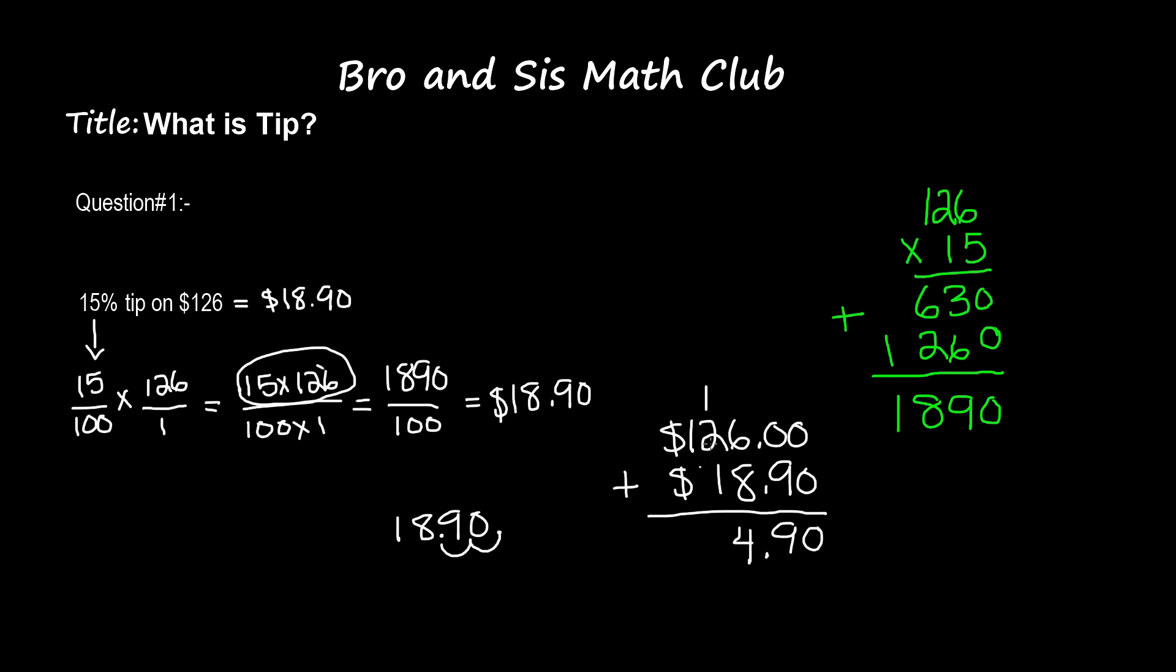Put that 4 here, bring that 1 over. 2 plus 1 is 3, plus that 1 is going to give us 4. We bring down that 1 and the money sign. So our total amount that we will have to pay including our tip is going to be $144.90.